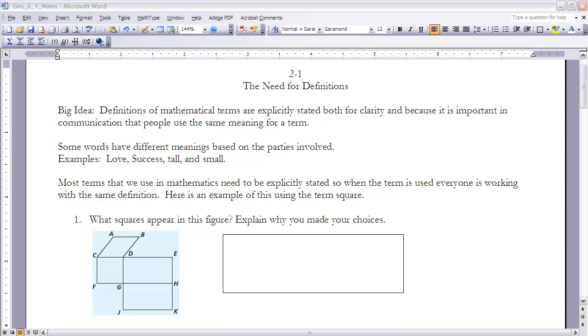First of all, the big idea in this section is the definitions of mathematical terms are explicitly stated both for clarity and because it is important in communication that people use the same meaning for a term. If you think about some words in the English language, they may have a different meaning depending on who's talking or using that word. The word love or success, tall, small, big - all of those terms are somewhat ambiguous. There's not a specific definition for them.